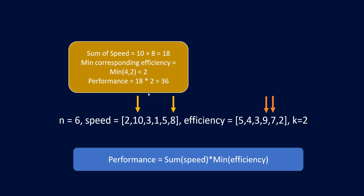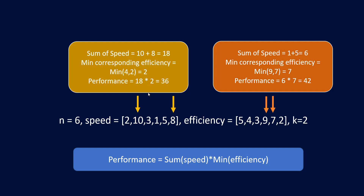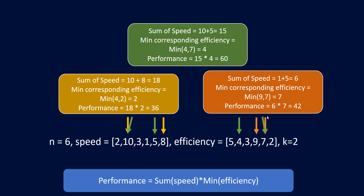For maximum efficiency, the sum of speeds for those two engineers is 1 plus 5, and the minimum efficiency is 7, giving a performance of 42. But was this the answer? No. The correct answer considers the engineer with speed 10 and efficiency 4 paired with speed 5 and efficiency 7, giving performance 60. So we can eliminate the idea that taking only one factor — speed or efficiency — is sufficient.